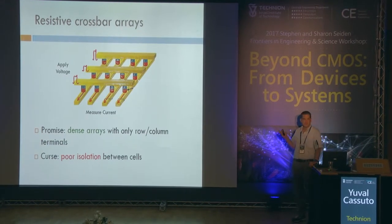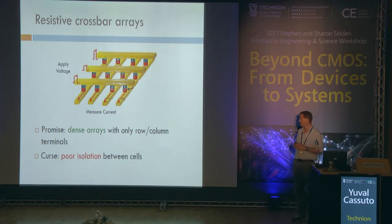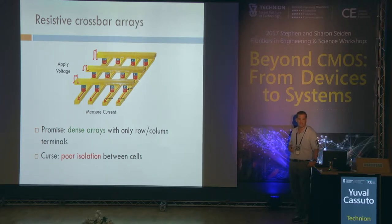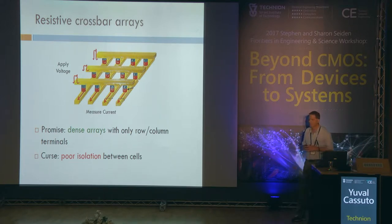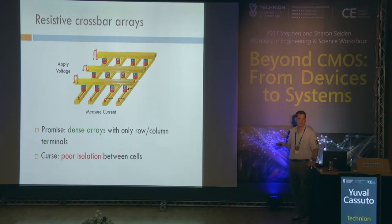The great promise of resistive technologies is that we can lay out those cells in a very dense crossbar structure. A crossbar is just rows and columns, where we only need terminals for rows and columns — not for each cell — and that gives us very good density and also low cost. But with that comes the curse that isolation between cells is much worse than what we are used to.